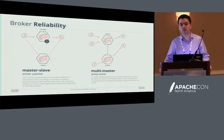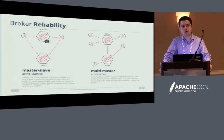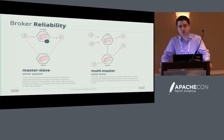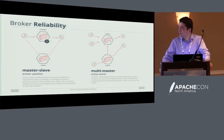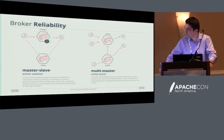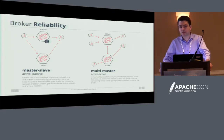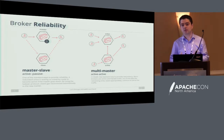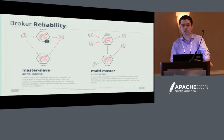When we realized we have a lot of brokers, we had to think about topology and how to make it reliable. In ActiveMQ there are mainly two types of reliability: Active-Passive and Active-Active, which is multi-master or master-slave. We chose the latter one, multi-master, because our infrastructure is large, addresses multiple availability zones, and requires failover between those.